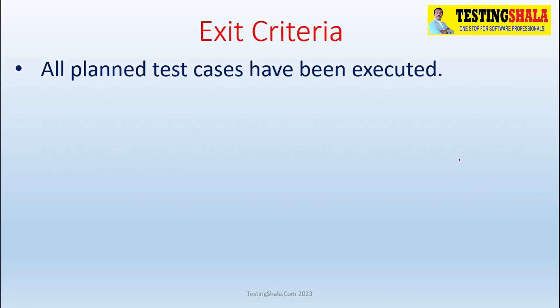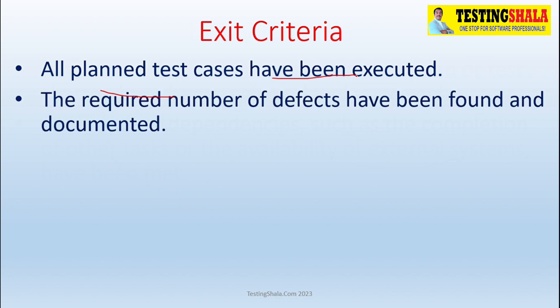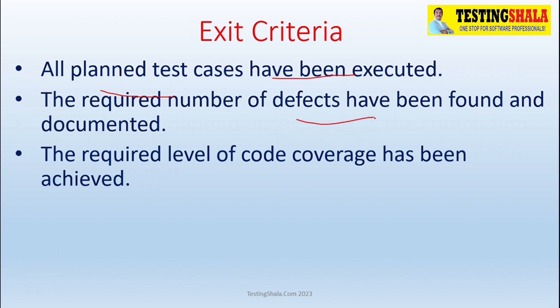Now we will understand the key exit criteria for a given software testing project. The first exit criteria is that all planned test cases have been executed — whatever test cases were created, planned, and approved must be executed in order to exit the testing project.